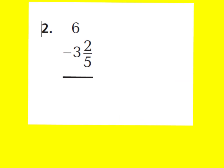Alright boys and girls, we're going to start with question 2. It says: if you have 6 wholes and you want to subtract 3 and 2 fifths, what would be the difference? Now a common mistake is some kids would just drop the 2 fifths down and then subtract 6 minus 3. But you can't do that. I'll show you why. What you need to do is you have to regroup.